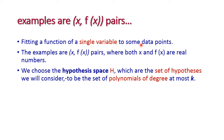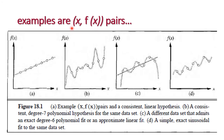First, fitting a function of a single variable to some data points. For example, a straight line function f(x) = mx + c, where we have only a single variable x, and both x and f(x) are real numbers. We choose the hypothesis space H — the set of hypotheses considered — to be the set of polynomials of degree at most k. We are going to apply both straight line and polynomial functions to a set of examples. The first diagram shows a linear hypothesis, where all data points exactly fit into the linear hypothesis function.